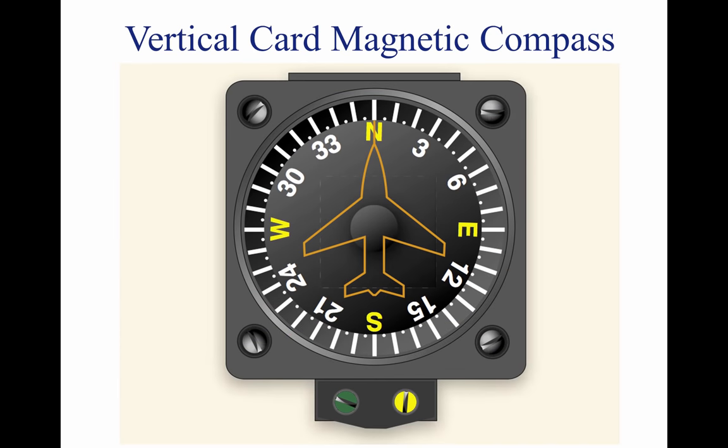The floating magnet type of compass not only has all the errors just described, but also lends itself to confused reading. It is easy to begin a turn in the wrong direction because its card appears backward — east is on what the pilot would expect to be the west side. The vertical card magnetic compass eliminates some of the errors and confusion. The dial is graduated with letters representing the cardinal directions, numbers every 30 degrees, and tick marks every 5 degrees. The dial is rotated by a set of gears from the shaft-mounted magnet, and the nose of the symbolic aircraft on the instrument glass represents the lubber line for reading the heading.